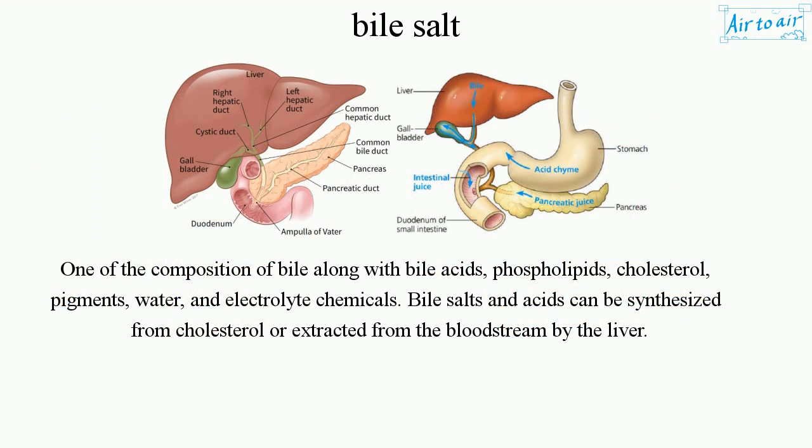Bile salts are one of the compositions of bile, along with bile acids, phospholipids, cholesterol, pigments, water, and electrolytes. Bile salts and acids can be synthesized from cholesterol or extracted from the bloodstream by the liver.